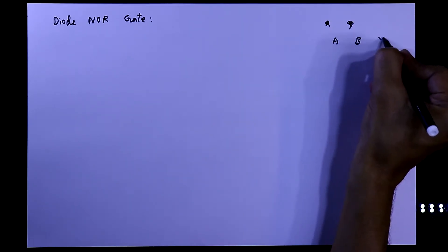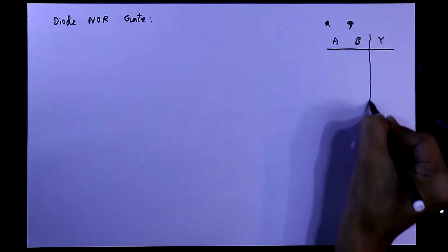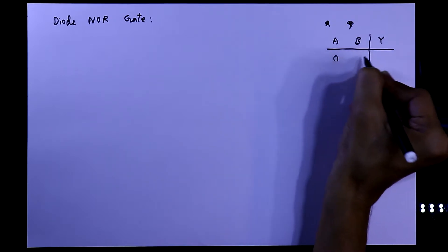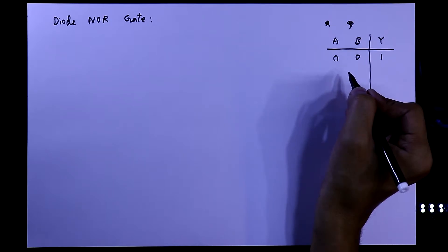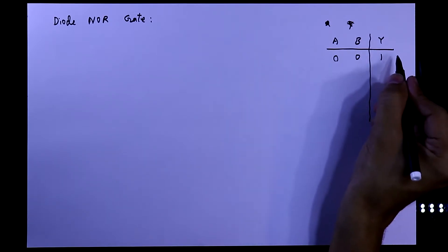A and B are the inputs and Y is the output. When both are 0 then the output should be 1. If any input is 1 then output should be 0.